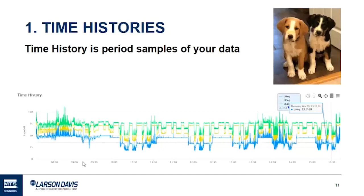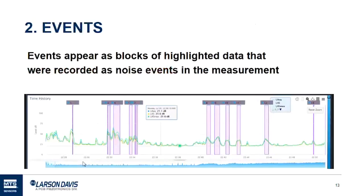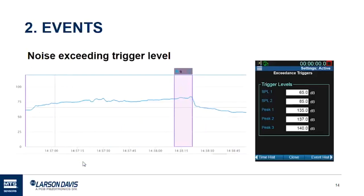Now we're going to move on to the second topic: event-based measurement. What is an event? An event is when the sound exceeds a user-defined trigger level, so the meter automatically begins flagging the data, and when the sound exceedance is over, the event ends. Let's imagine background noise sitting at about 50 decibels and then an aircraft flies by at 67 decibels. The trigger is set at 65 decibels, so the meter begins an event right at the beginning and ends once the aircraft is no longer above 65 decibels. This is the way events are triggered when set to level.